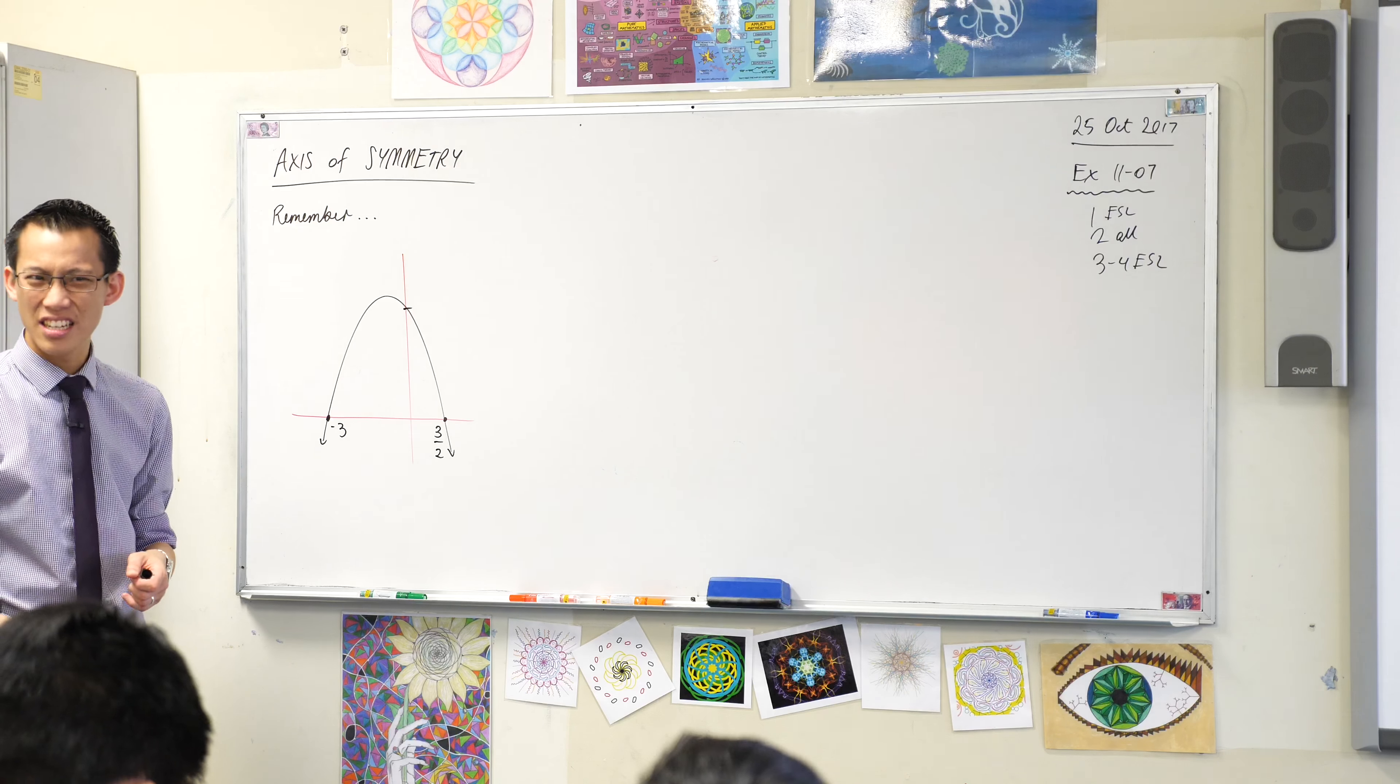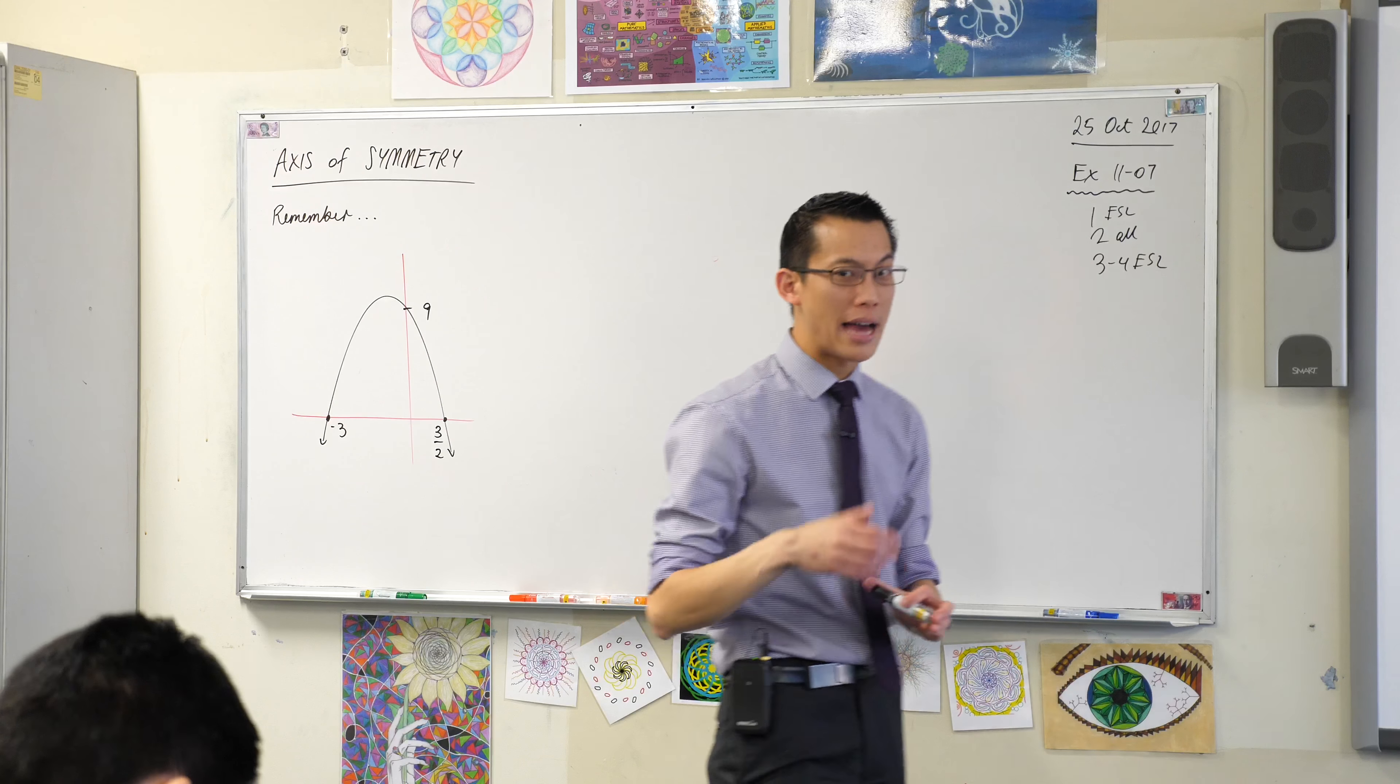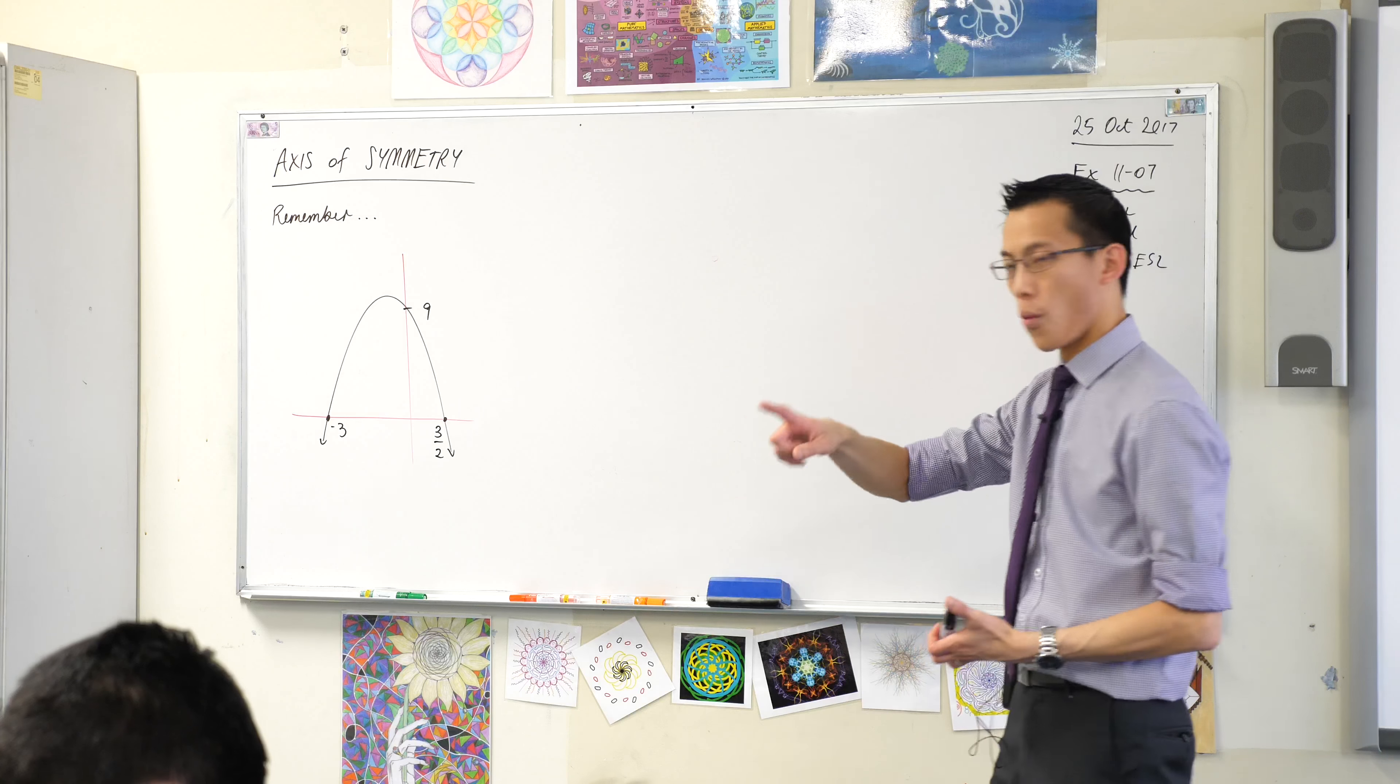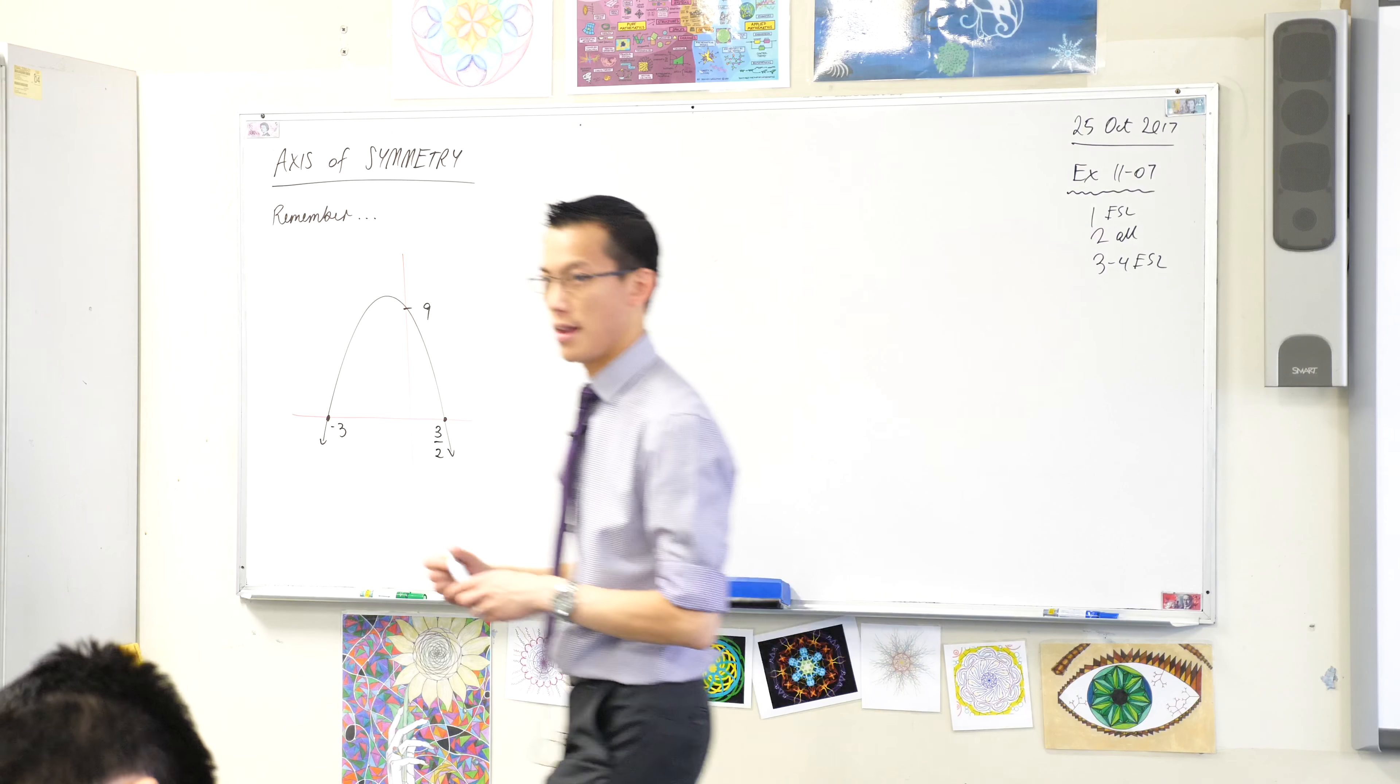9. I was close. And then I said to you, by the way, it's important that you know where the parabola turns around. What's the special name of that point? It's the vertex.